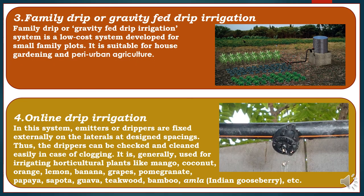The third drip irrigation method is family drip or gravity-fed drip irrigation. This is a low-cost system developed for small family plots, suitable for house gardening and peri-urban agriculture.